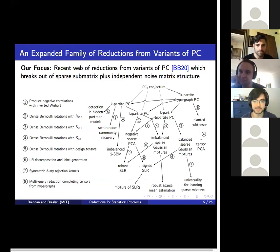What we'll focus on is our recent web of reductions that breaks out of this sparse submatrix structure that limited previous reductions. The main insight is that instead of starting with Planted Clique, we can start with mild modifications of Planted Clique, and this yields new techniques for average case reductions. The mild modifications provide flexibility just enough to make certain technical insights go through. The plan is to illustrate one technique in detail through a reduction to robust sparse mean estimation. We'll be following this line in the web from K-partite hypergraph PC to K-part BPC.